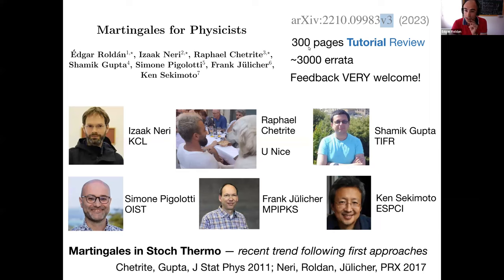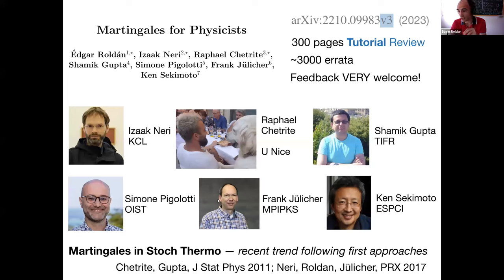It's very long — 300 pages — and I expect it has around 3000 errata, so whoever reads the review and finds a typo, we welcome feedback. Here are the collaborators: Isaac, Rafael, Shamik, Simone, Frank, and Ken. Most of the results we review here belong to this recent trend in applying martingale theory to thermodynamics.